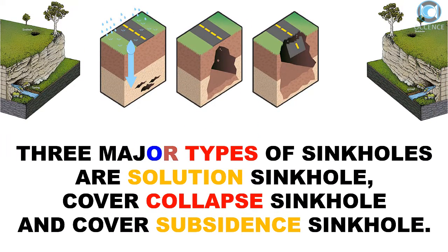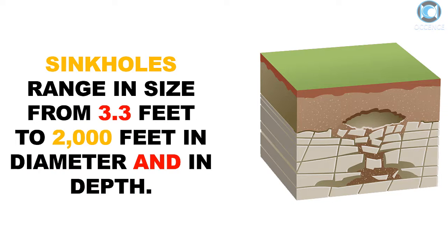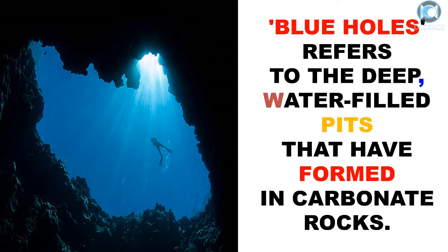Three major types of sinkholes are solution sinkholes, cover collapse sinkholes, and cover subsidence sinkholes. Sinkholes range in size from 3.3 feet to 2,000 feet in diameter and in depth. Blue holes refer to the deep water-filled pits that have formed in carbonate rocks.